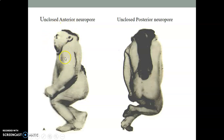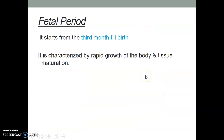Unclosed posterior neural pole can also occur. After the embryonic period, the fetal period starts at the third month and continues until birth, generally characterized by rapid growth and tissue maturation. The embryonic period is very critical because that is where teratogenic insults can most easily occur.